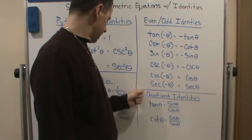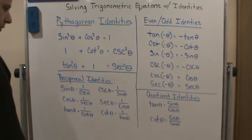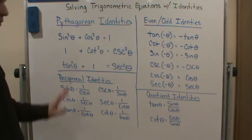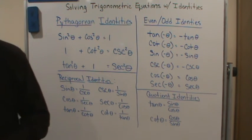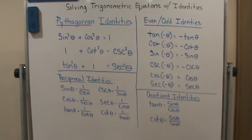And then we have the quotient identities that we've talked about. So these are what you should know. Make sure you know them going forward, and we're going to be doing a bunch of examples using these. See you then.